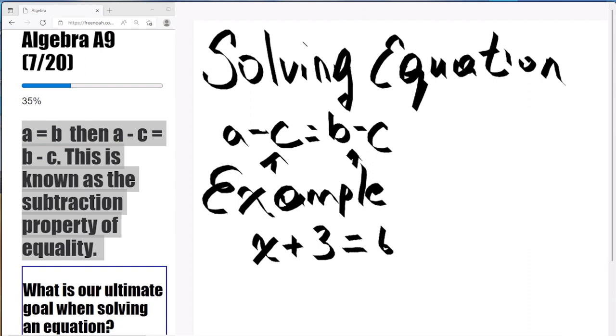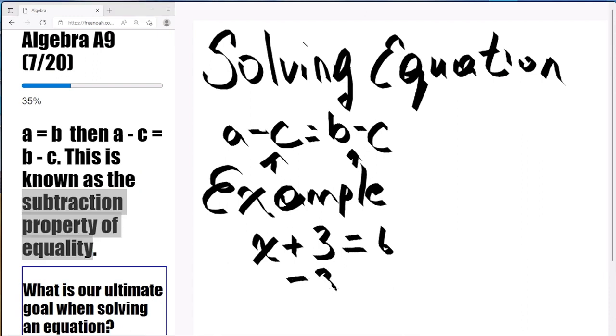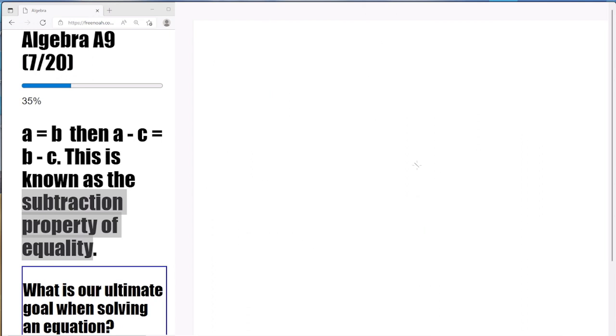we have X plus 3 equals 6. Well, we're going to subtract this time. What we do on the left side of the equal sign, we need to do on the right side. So let's go ahead and minus 3 on the left side and minus 3 on the right side of the equation. We're left with X equals 3. You've got 6 minus 3 is 3 and 3 minus 3 is 0.